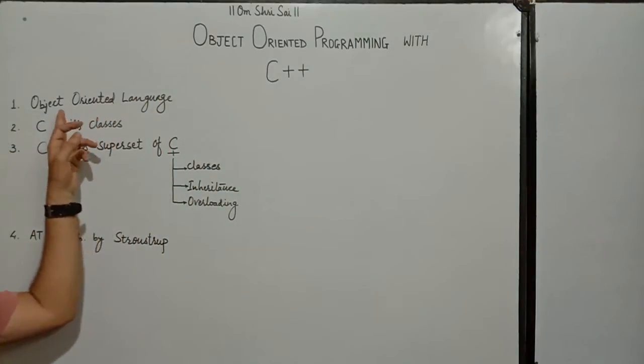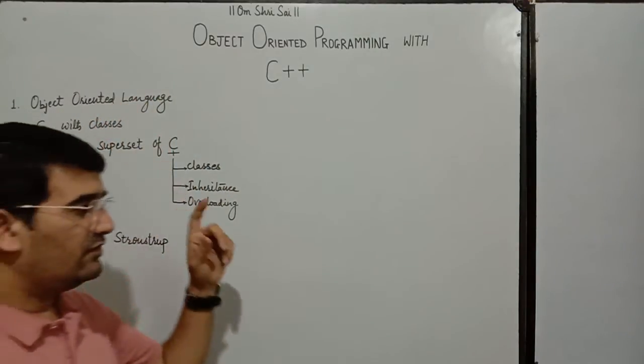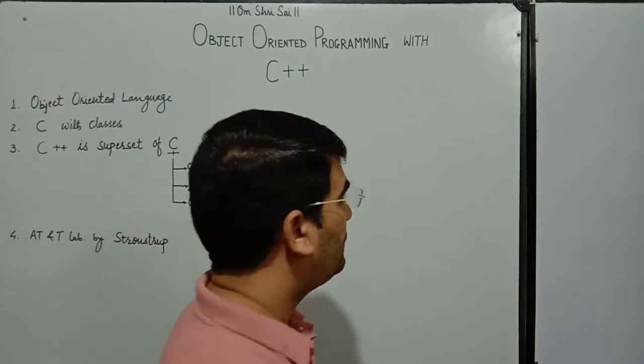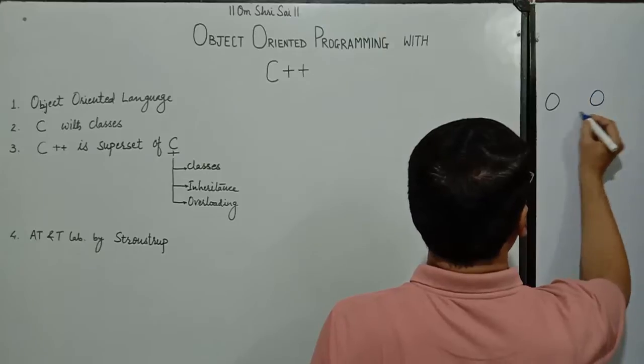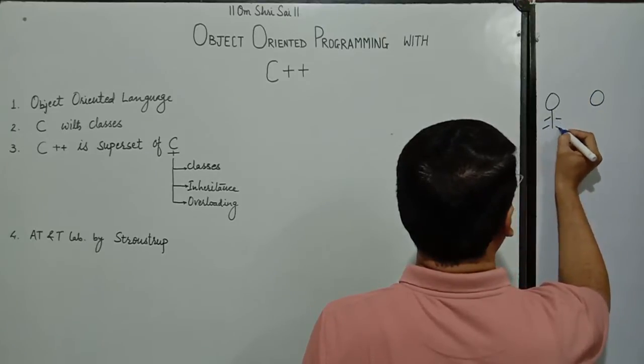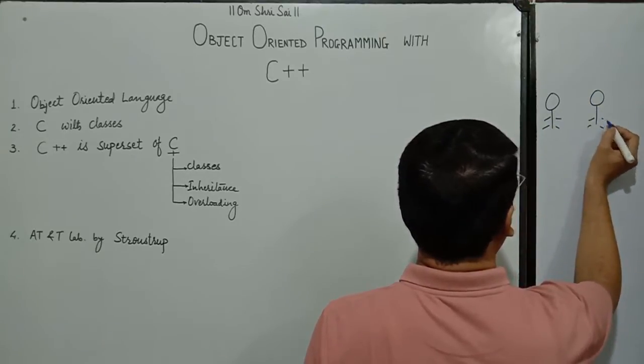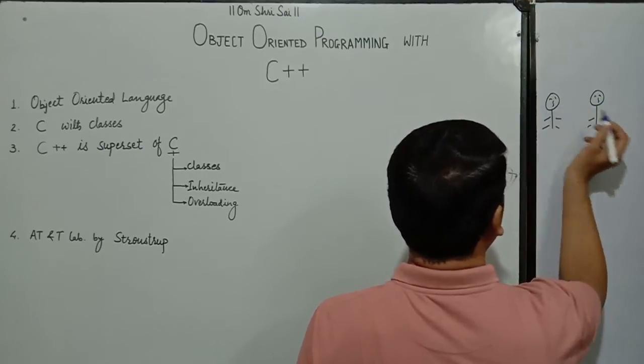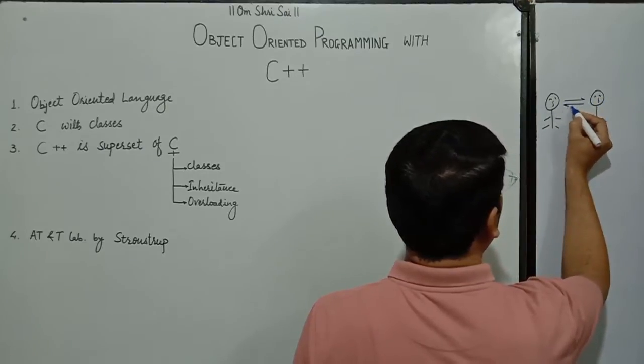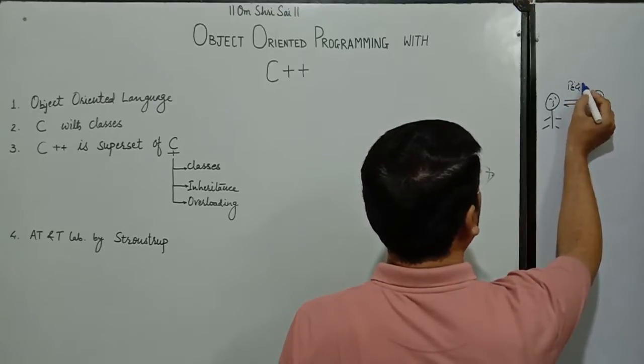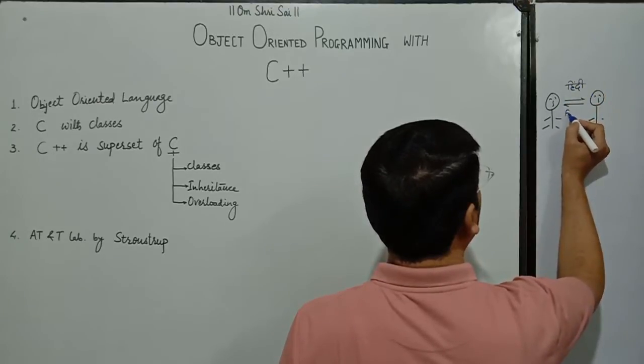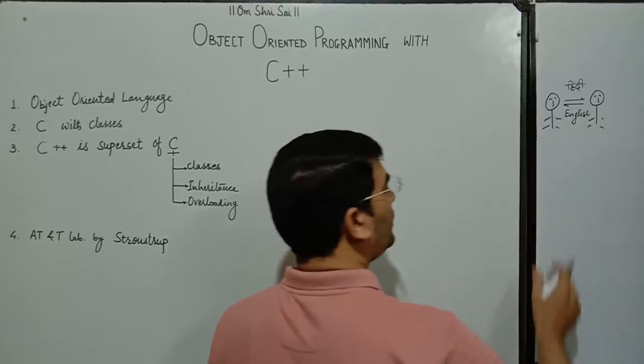So C++ is an object oriented programming language. First of all we should discuss what is language. If we want to establish a communication between two sides, we require a common language between two sides. For example, if we talk about the conversation or communication between the human beings, we require at least a common language either that will be Hindi or English. Then only the communication will be possible.